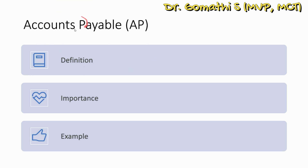Next, accounts payable refers to managing a company's outstanding bills and payments to vendors. It ensures timely payment and accurate tracking of liabilities. For instance, when a company receives an invoice from a supplier for the purchase of goods, it is recorded in the accounts payable module. When the payment is due, it is processed, reducing the accounts payable balance.